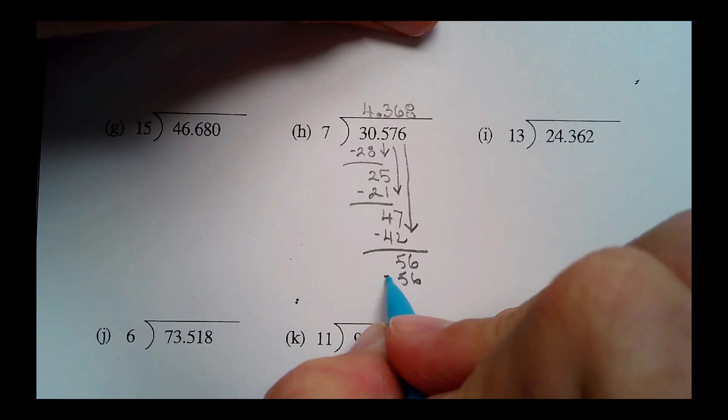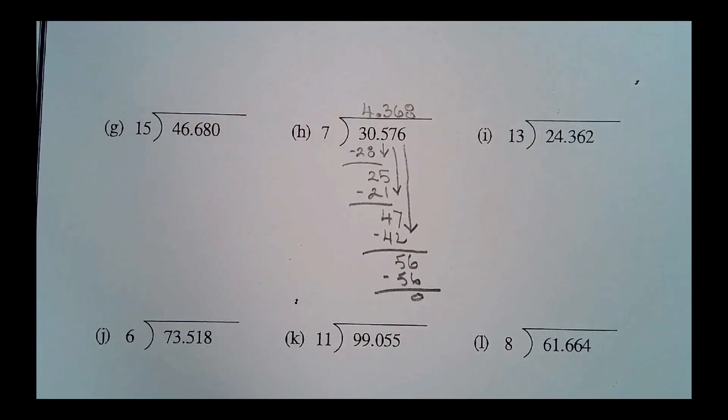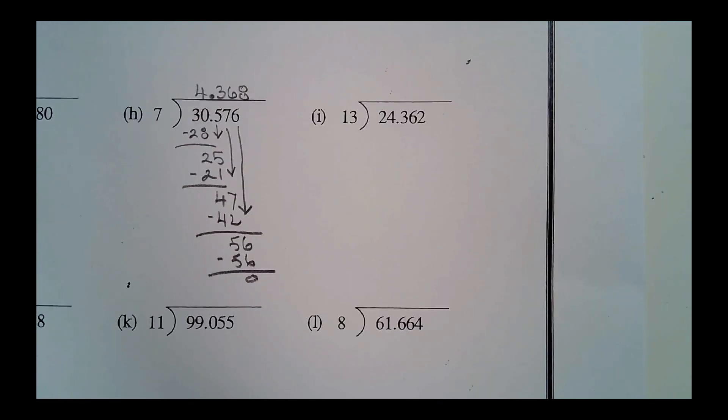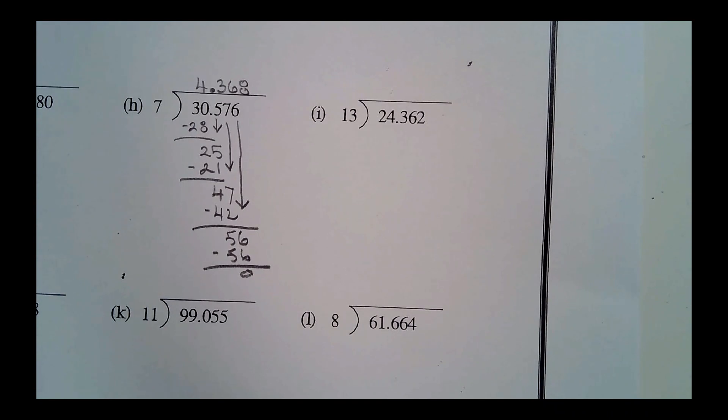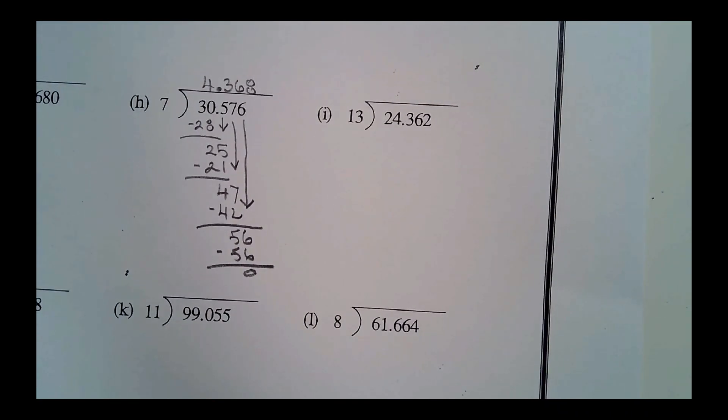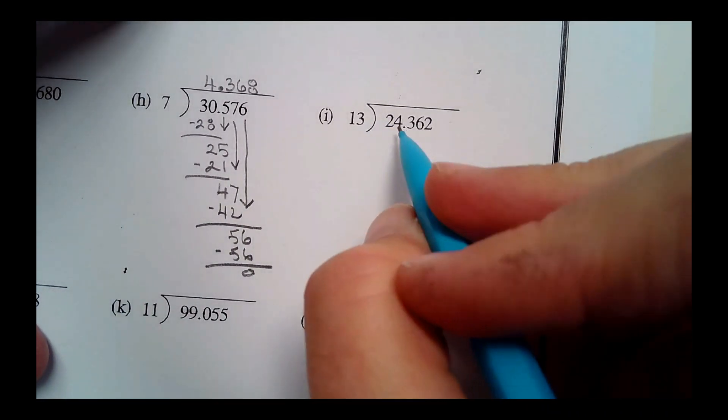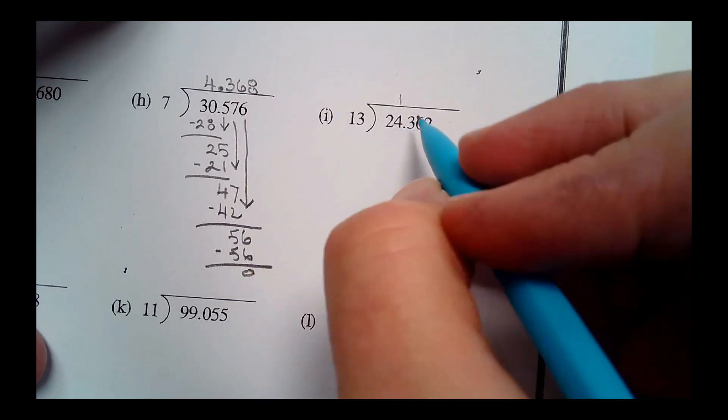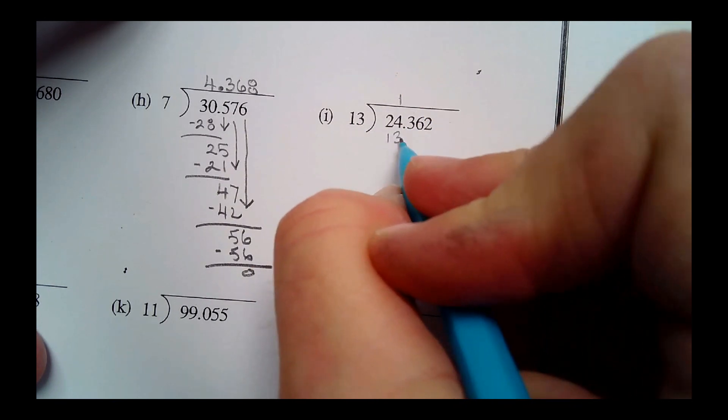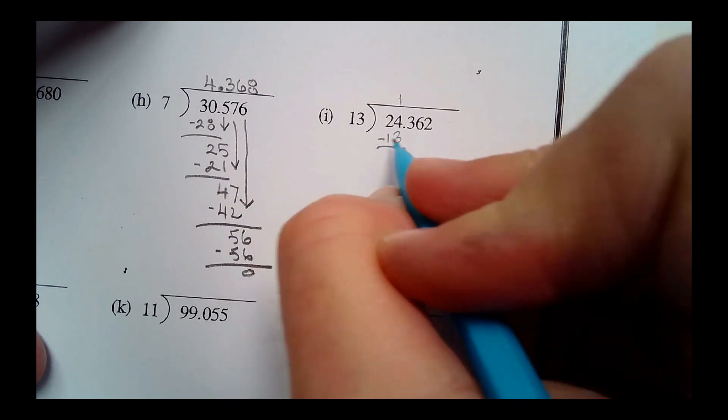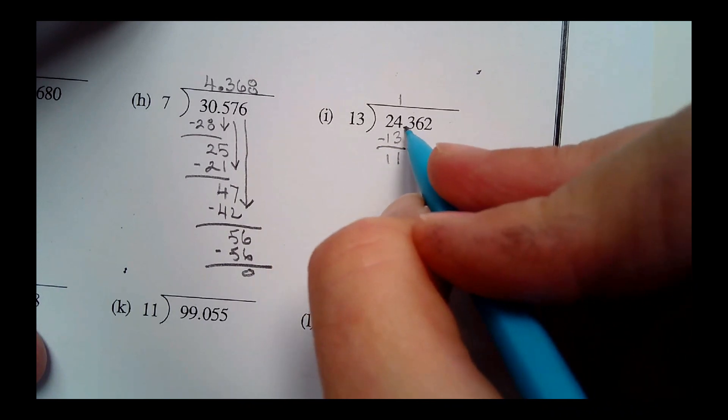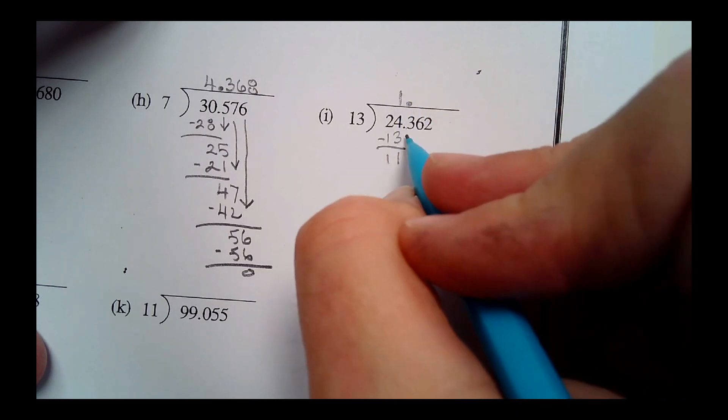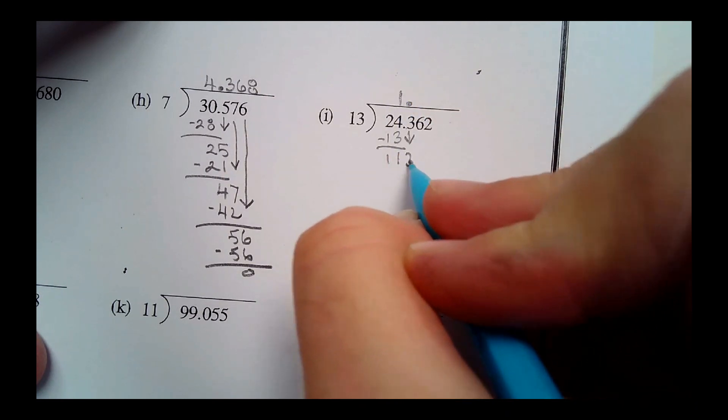All right, so 13 into 24. That's gonna go once, won't go twice because 13 twice is 26—that's going to be too big. So I'll put down 13 and I'm going to subtract that, and that's 11. What do I do with this decimal? Go straight up, straight up from there. Okay, now I bring down the three. Now we have 113.